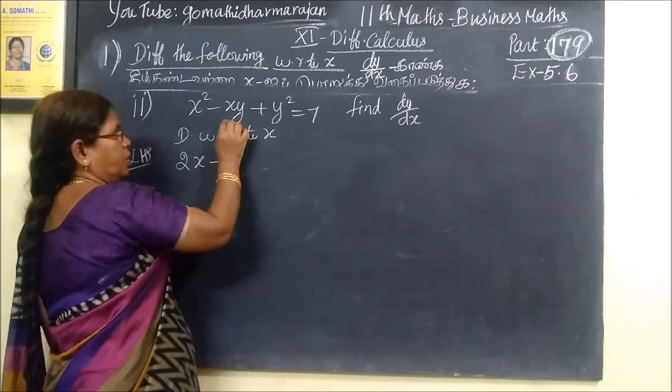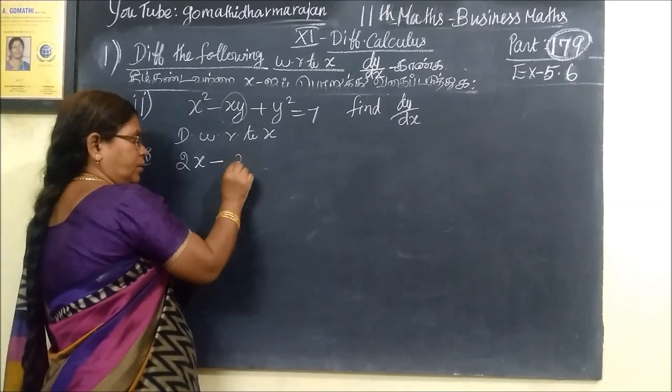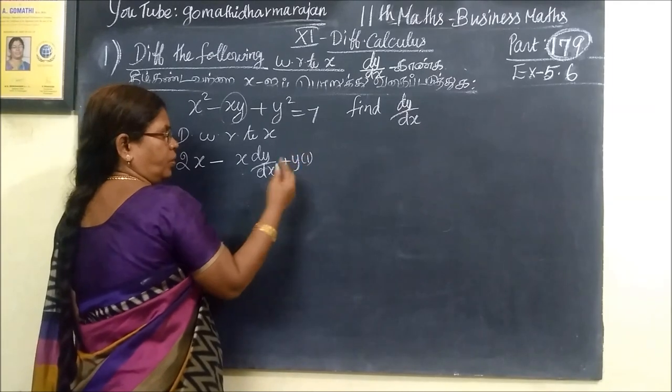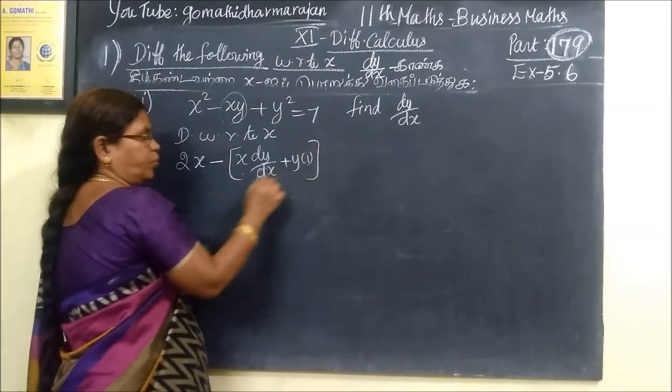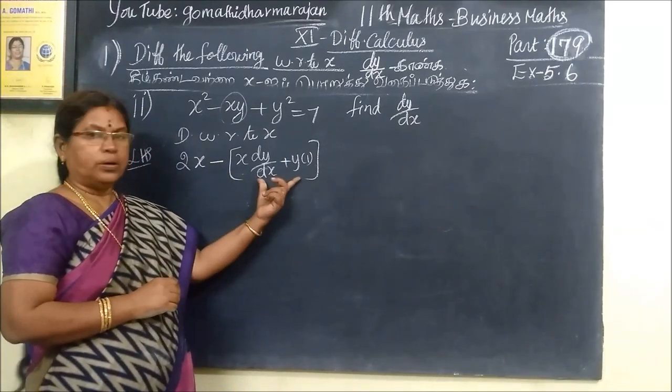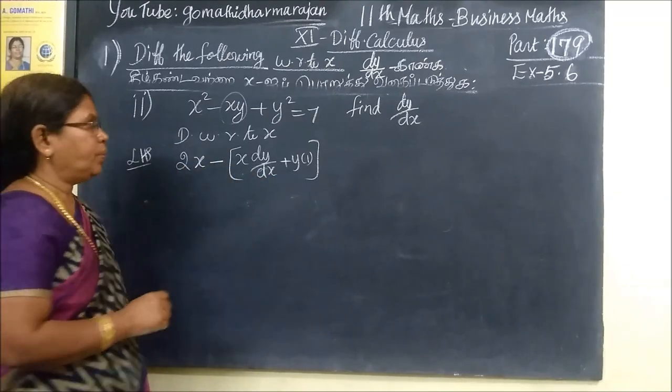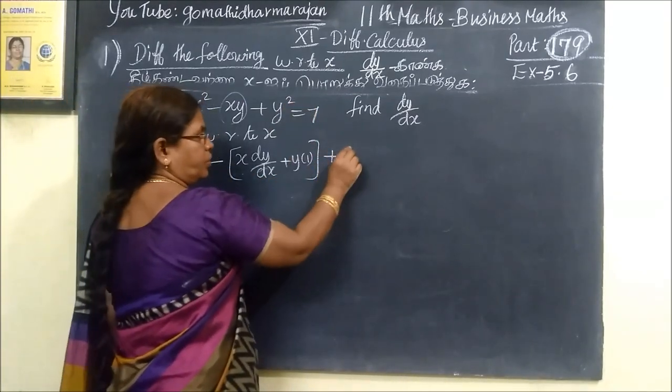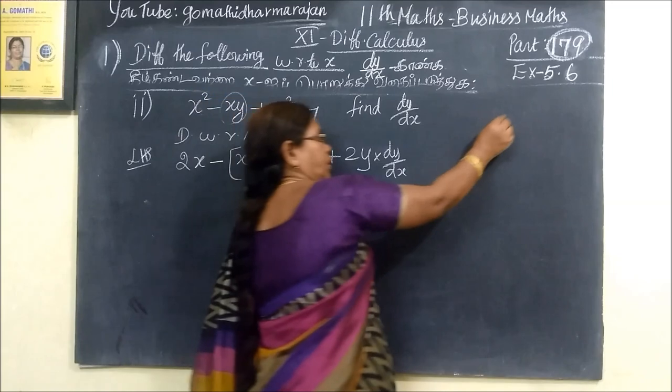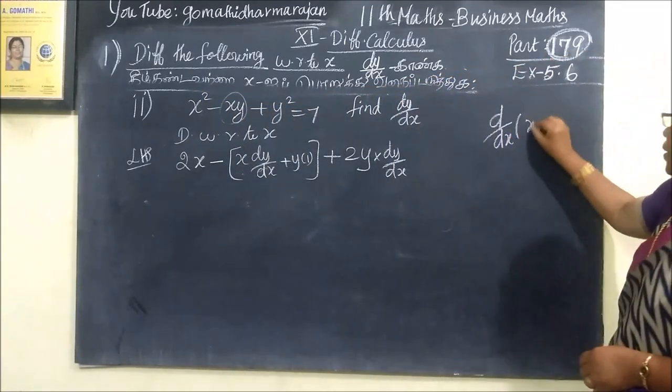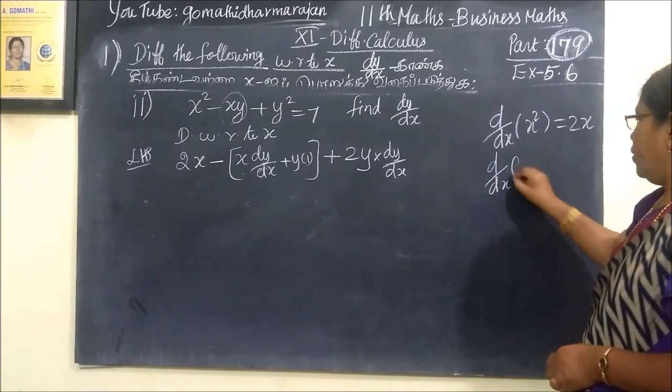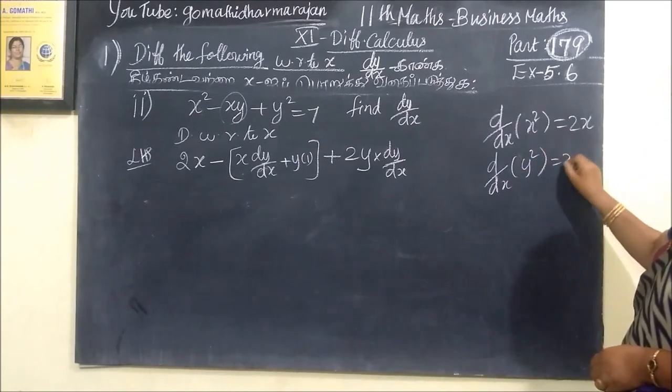2x minus xy. If we differentiate, d by dx of y squared, we will get 2y dy/dx.